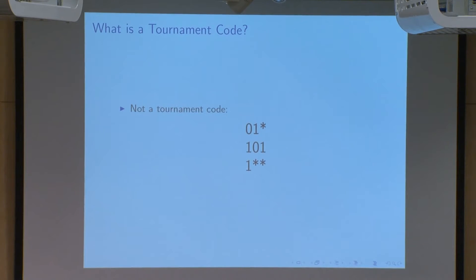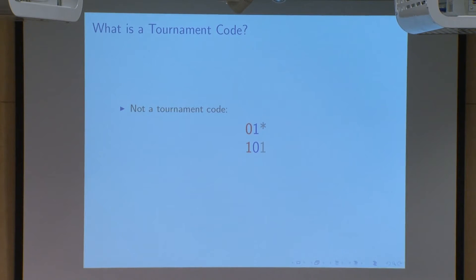Just to give some clarifications on the definition of tournament codes, let's go over an example of a code that is not a tournament code. This is a code of length three and size three. In the first two strings, we see that the first string is less than the second string at position one, but greater than the second string at position two. Therefore, these two strings are not comparable. Also, looking at the second and third string, there are no positions where neither string is star and where both strings are not equal, so the second string is also not comparable to the third string.